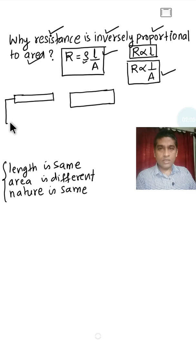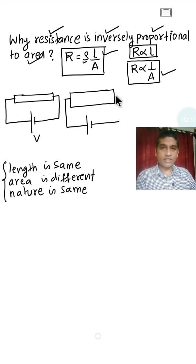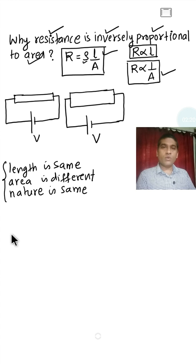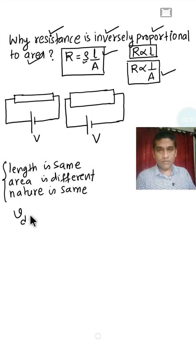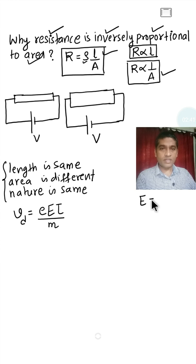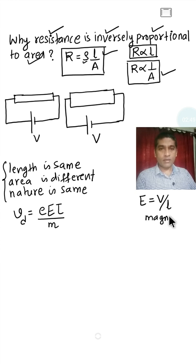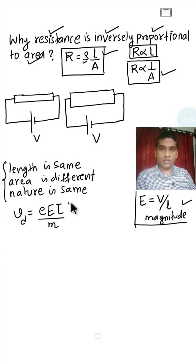Now, let us apply the same potential difference across these two wires. Let V be the potential difference. We know the relation between drift speed and electric field. In magnitude, we can write Vd equal to (e × E × tau) divided by m. And in magnitude, electric field E equals potential difference divided by length. We use this relation in the drift speed equation.